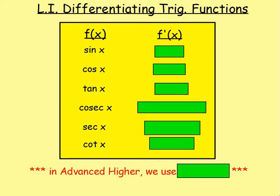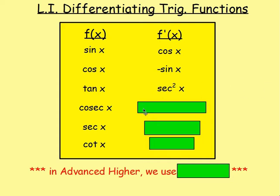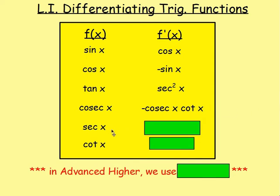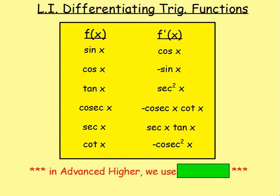Differentiating trig functions. If f(x) = sin x, then f'(x) = cos x. If you differentiate cos x, you get negative sin x. If you differentiate tan x, you get sec²x. If you differentiate cosec x, you get negative cosec x cot x. If you differentiate sec x, you get sec x tan x. And if you differentiate cot x, you get negative cosec²x. This is given on the formula sheet, so you do not have to remember it — apart from sin and cos. And just remember, we're always working with radians in advanced higher.